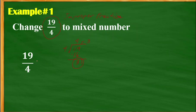In rewriting this one into a mixed number, the whole number is placed outside the fraction bar. The remainder is placed in the numerator, and the divisor would be the denominator. So this would be the final answer. The final answer is 4 and 3 fourths.